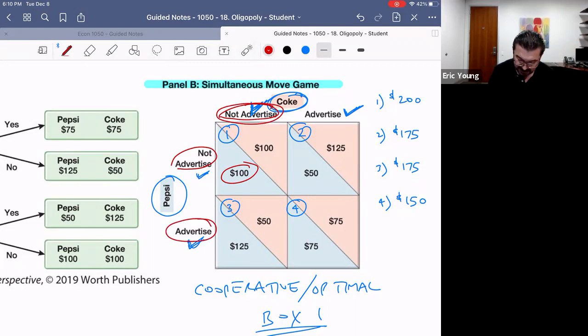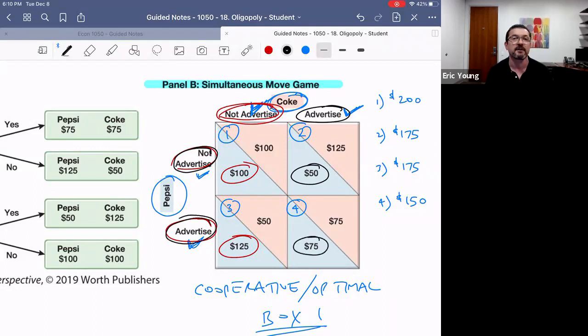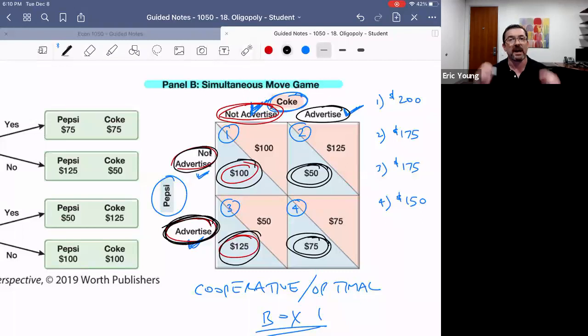Let's now say that Coke decides to advertise. Pepsi can decide to not advertise and only make 50. Pepsi can decide to advertise and make 75. You see where I'm going with this? Regardless of what Coke does, Pepsi's best bet is to advertise, because 125 is greater than 100 and 75 is greater than 50. So Pepsi's dominant strategy: advertise.